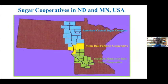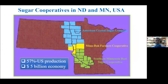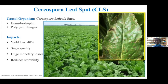American Crystal Sugar Company and Southern Minnesota Beet Sugar Cooperative combined contributed approximately 57 percent of total US sugar production, corresponding to a five billion dollar economy. But sugar beet production is highly influenced by Cercospora beticola, which causes Cercospora leaf spot disease — a major foliar destructive disease. It is a hemibiotropic polycyclic fungus with significant impact on sugar beet production, causing yield loss up to 40 percent or even more in severe conditions, reducing sugar quality, causing huge monetary loss, and reducing storability in the piles.